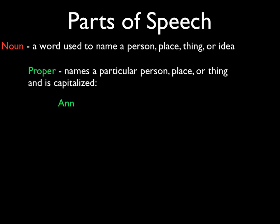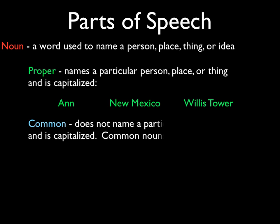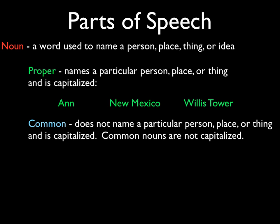For example, you will always capitalize someone's name like Ann, or the name of a state like New Mexico, or the name of a place such as the Willis Tower in Chicago — you would capitalize that as well. There's also the common noun. A common noun does not name a particular place, person, or thing, and it is not ever capitalized. Common nouns would be something like woman, state, building.